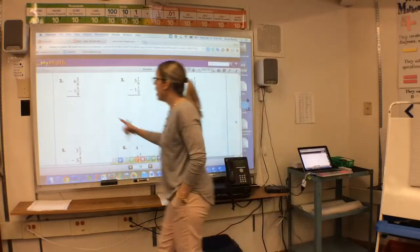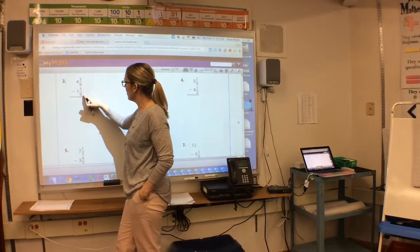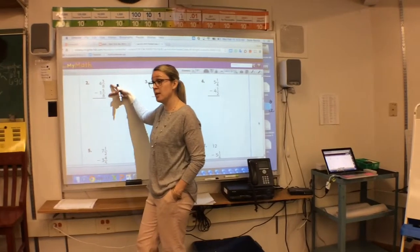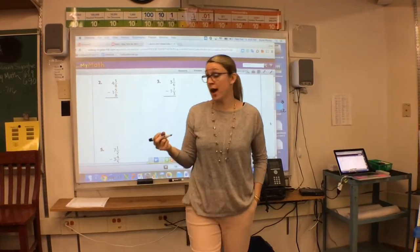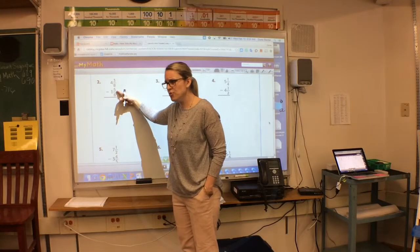Now, I'm going to look at this problem. 4 and 3 eighths take away 1 and 5 eighths. The denominators are the same, so I'm ready to subtract. If you look here, 3 take away 5. Can I do that?